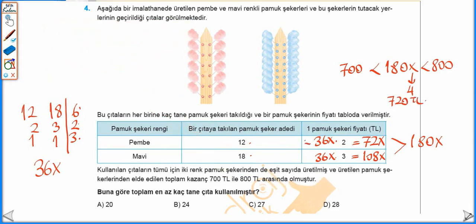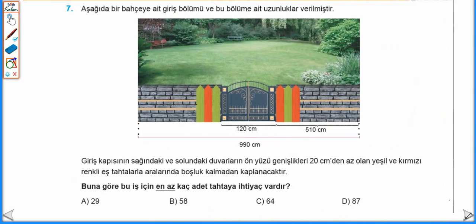x eşittir 4 ise 36x yani 36 çarpı 4'ten toplam 144 tane şeker üretilir. 144'ü 12'ye böldüğümüzde 12 tane çıta pembe renk için, 144'ü 18'e böldüğümüzde 8 tane çıta mavi renk için, 12 artı 8 daha topladığımızda toplam 20 tane çıta gerekir. Yani cevap 20.